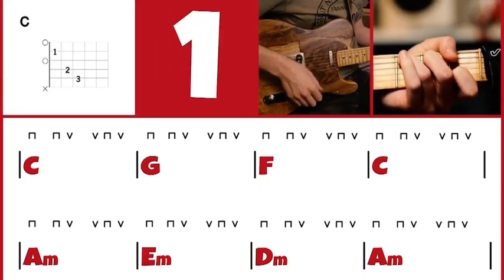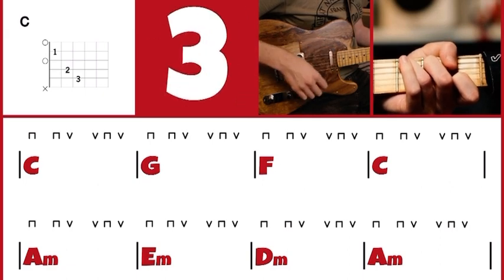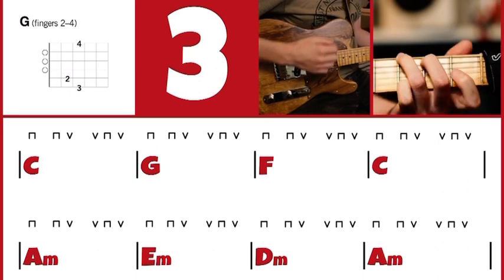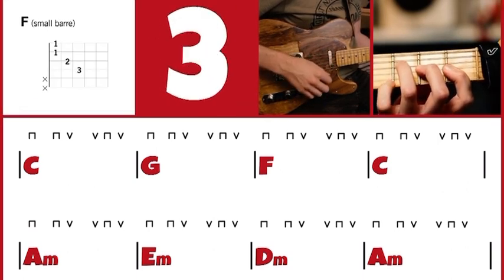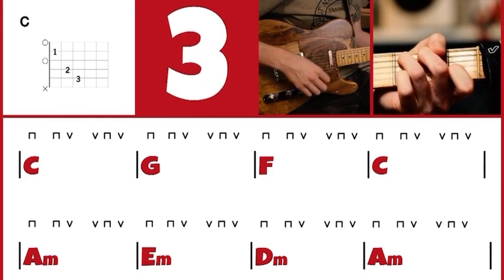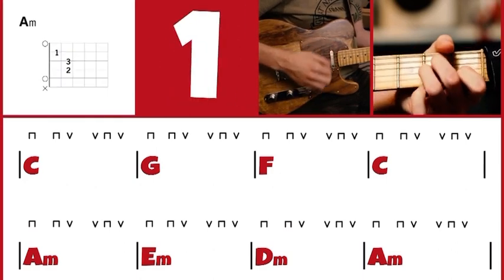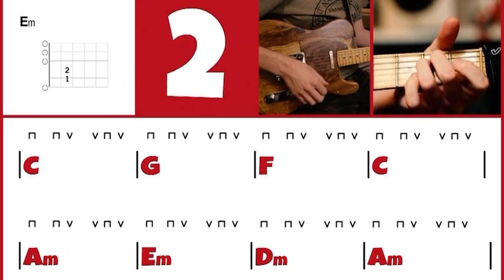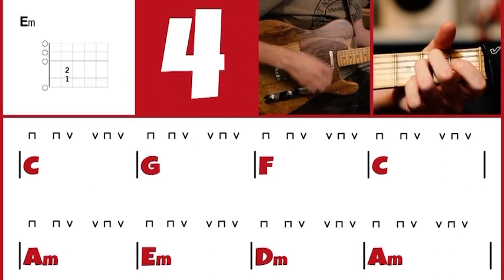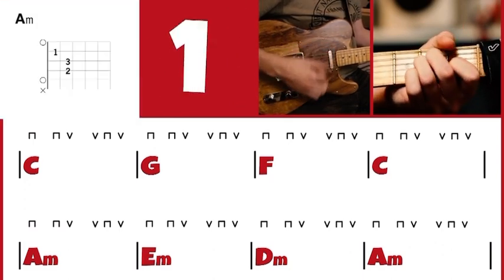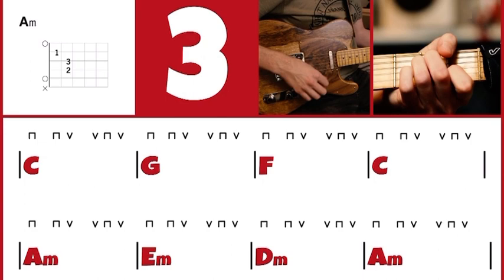One, two, three, four. C, two, three, four. G, two, three, four. F, two, three, four. C, two, three, four. A minor, two, three, four. E minor, two, three, four. D minor, two, three, four. A minor, two, three, four.